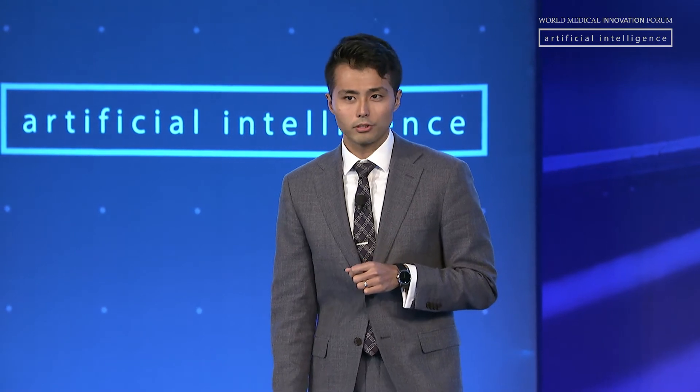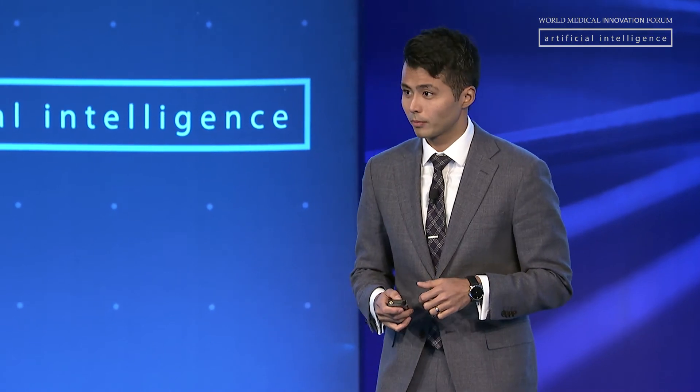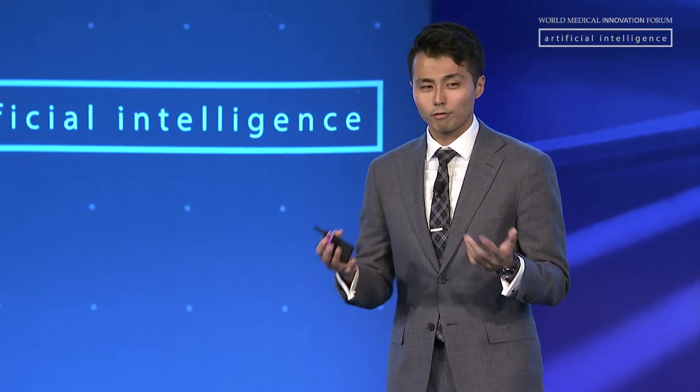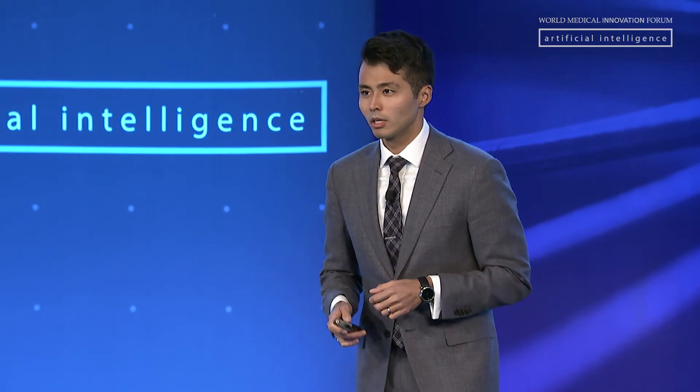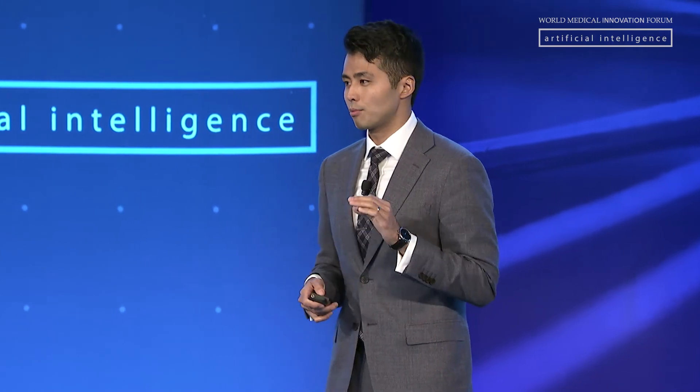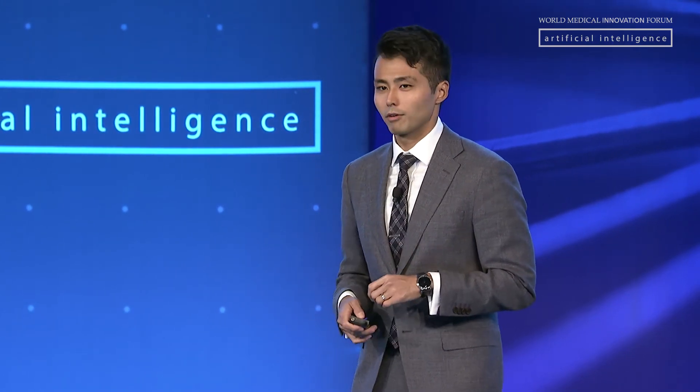We've taken the initial appropriate steps to begin to secure the intellectual property surrounding this work. To recap where we are: we have real-time identification of the phases and steps of an operation, and based on statistical modeling, we're able to detect when a deviation is occurring from an expected operative course. We're able to do this because we have a large volume of surgical data at MGH on which we can learn. But detecting deviations isn't enough — our goal is to predict and prevent the complication before it ever occurs.